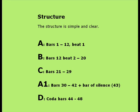The structure is simple and clear: A, bars 1 to 12 beat 1; B, bars 12 beat 2 to 20; C, bars 21 to 29; A1, bars 30 to 42; plus 1 bar of silence at bar 43; D Coda, bars 44 to 48.